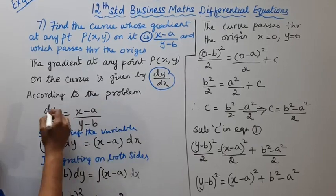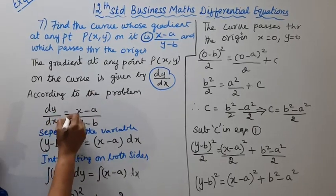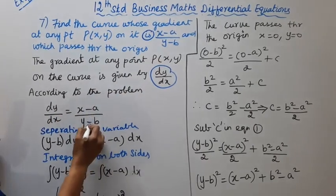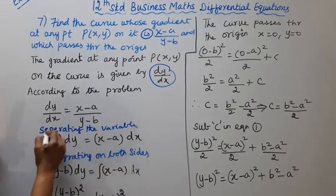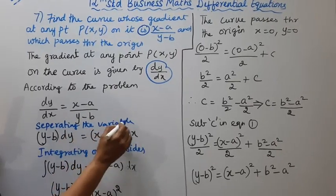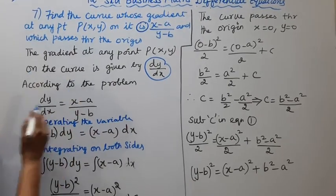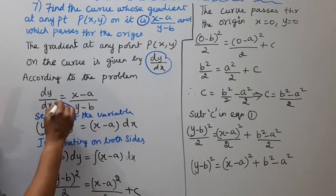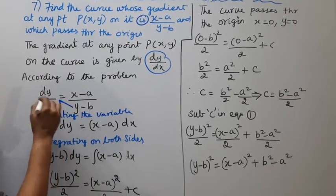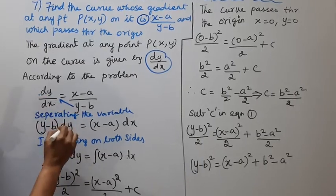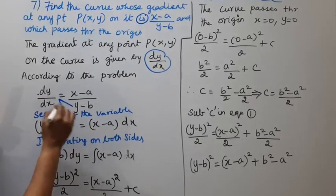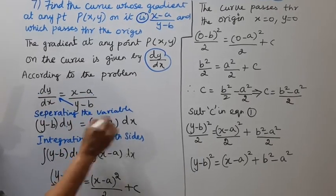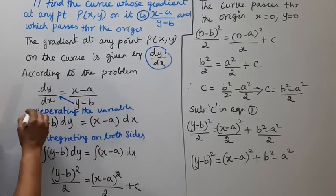According to the problem, dy by dx is (x-a) by (y-b). Separating the variables: (y-b) dy equal to (x-a) dx.